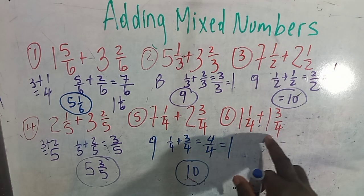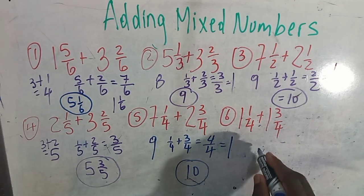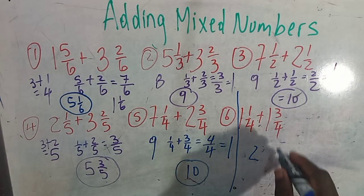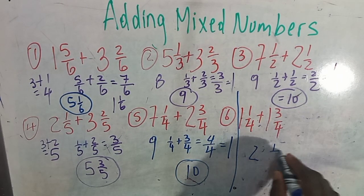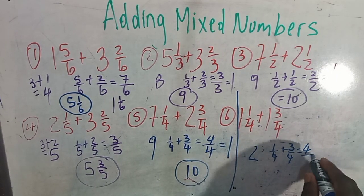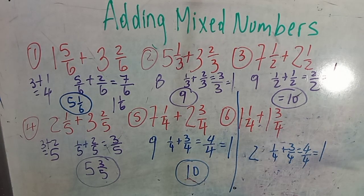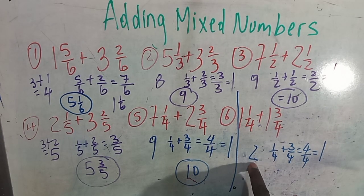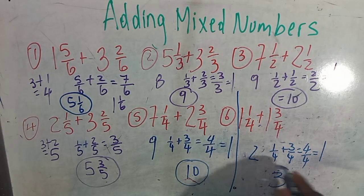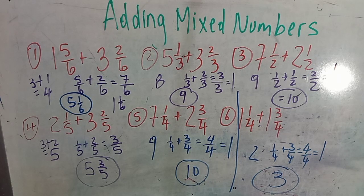Same principle applies. 1 and 1 give you 2. 1 plus 1 give you 2. Add the two fractions: a quarter plus 3 quarters is 4 upon itself, which is equal to 1. Then you are going to add the whole numbers: 2 plus 1 give you 3. And that would be your answer. Remember that you will add the whole numbers.